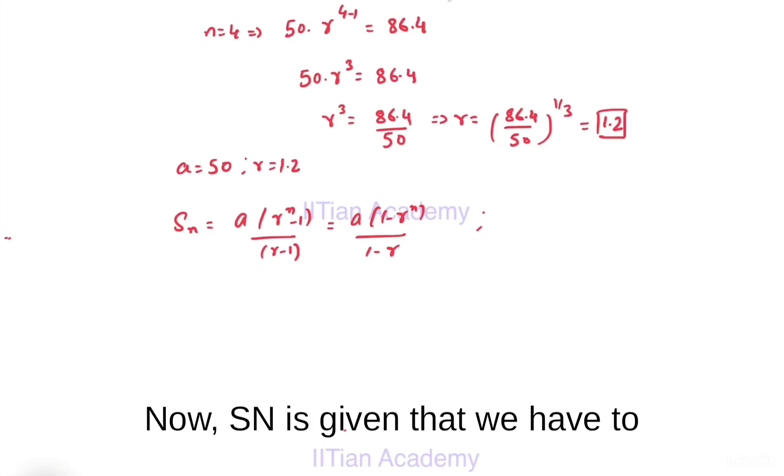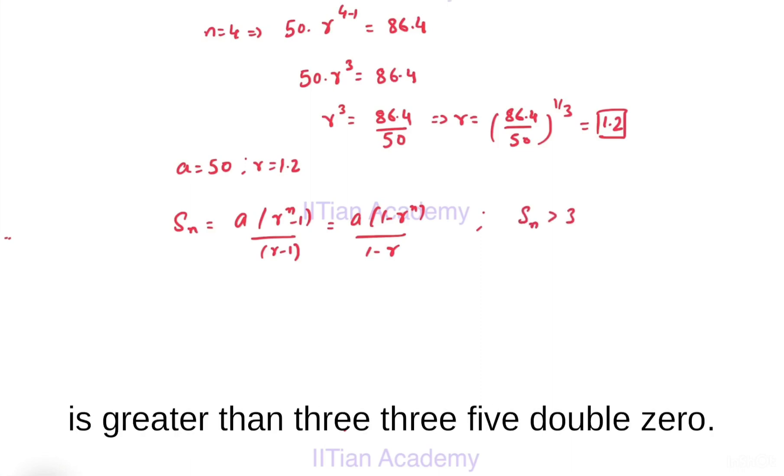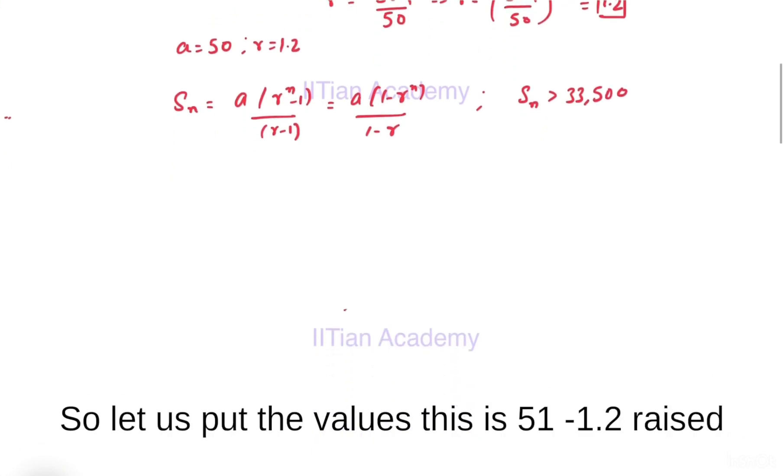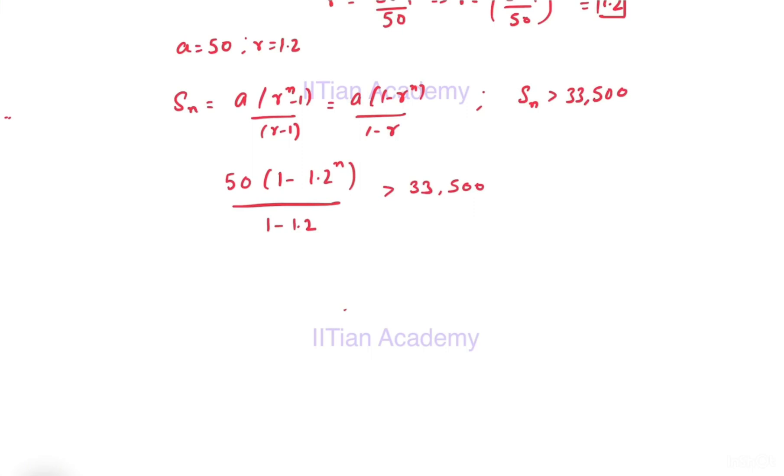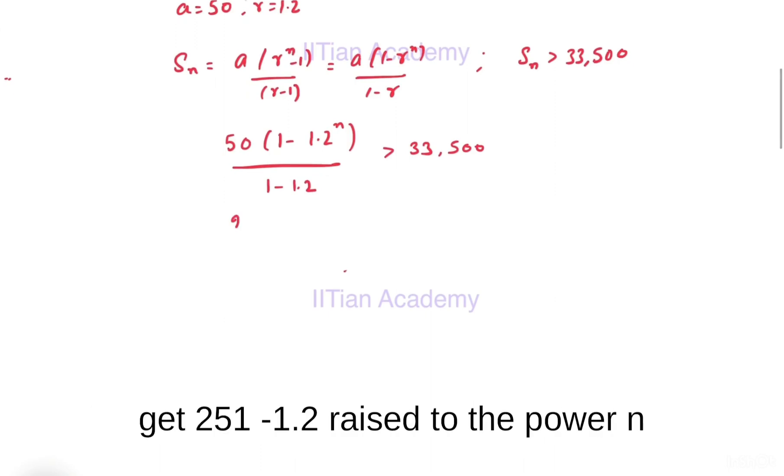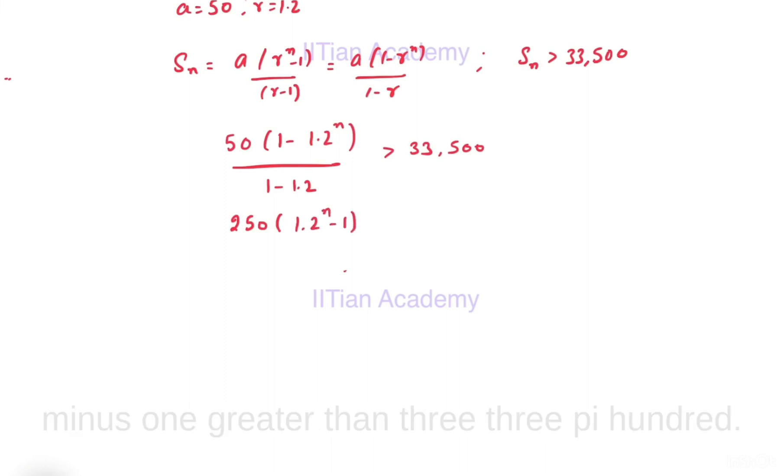Now, we have to find the value of n such that Sn is greater than 33,500. Let us put the values: This is 50, 1 minus 1.2 raised to the power n divided by 1 minus 1.2, greater than 33,500. You can solve this inequality. You will get 250, 1 minus 1.2 raised to the power n divided by minus 1, greater than 33,500.